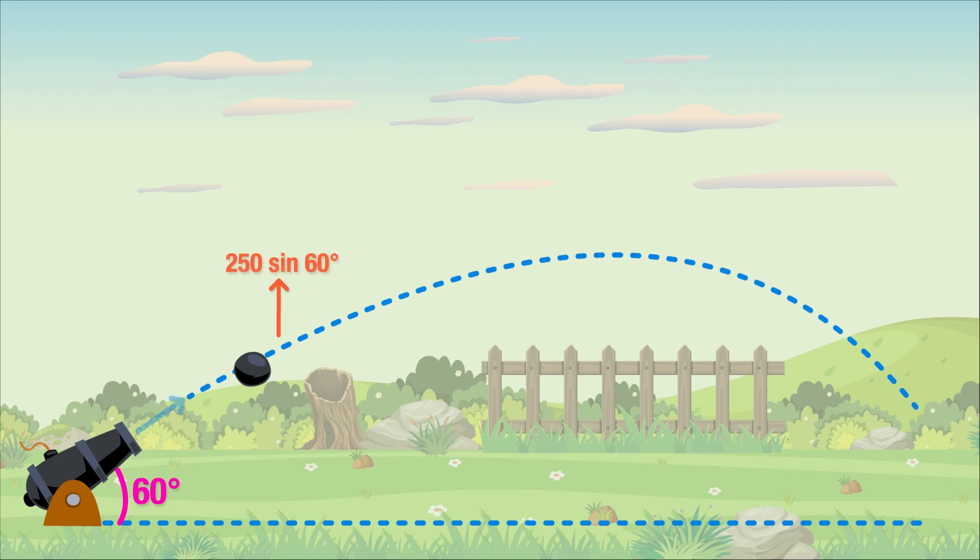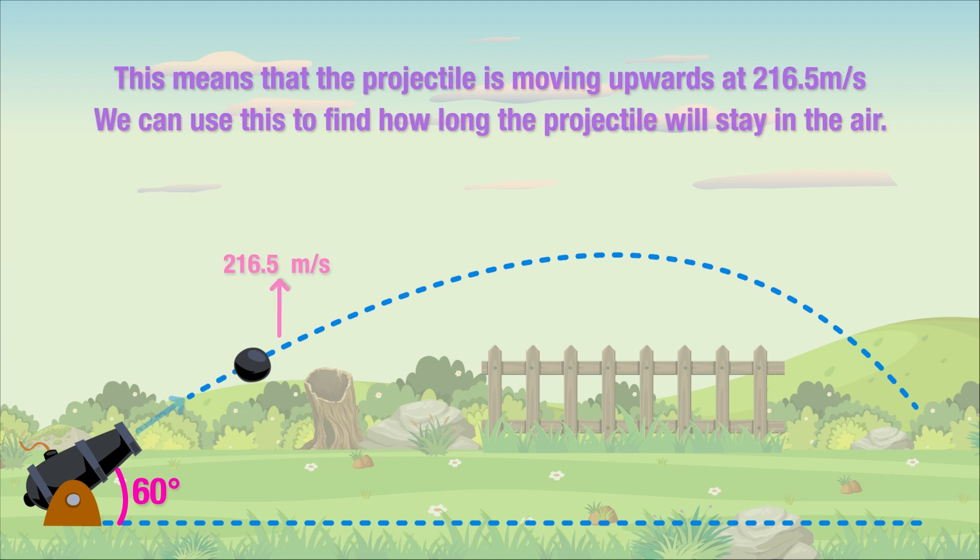The vertical component is important because it determines how long the projectile will remain in the air before it hits the ground. In our example, the vertical component is opposite the 60 degree angle of action, so we'll be using the sine function. The vertical component will be 250 sine 60, and this gives us a vertical velocity of 216.5 meters per second.